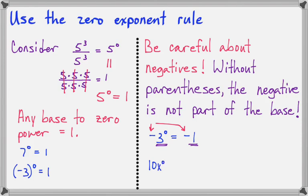Let's look at 10x to the 0. Well, here, the base is x. So x to the 0 is 1, but the 10 is going to stay.